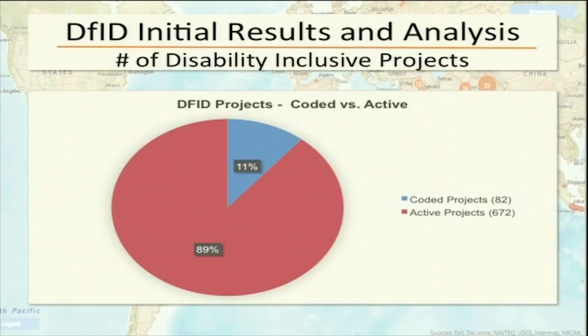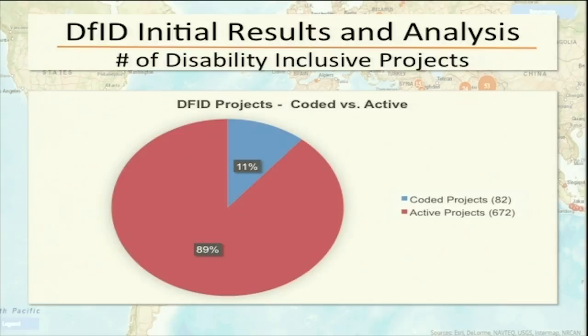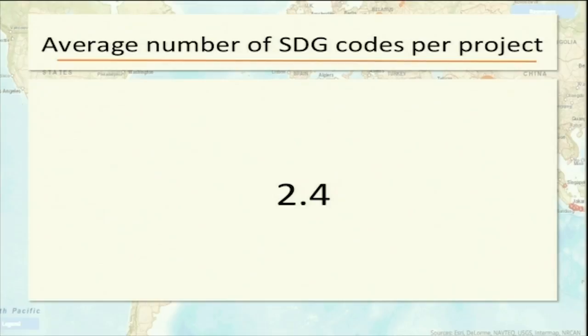Now we move to a bilateral agency — preliminary analysis of DFID's portfolio. Of their active portfolio of 672 projects at the time of review, we coded 11% overall. The average number of codes per project was 2.4 — slightly fewer than World Bank. The distribution across goals was somewhat different.